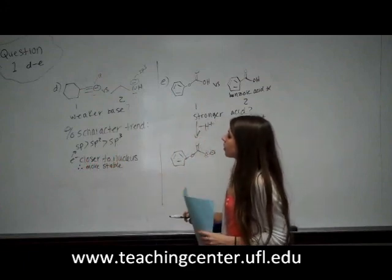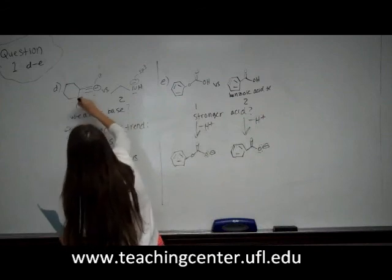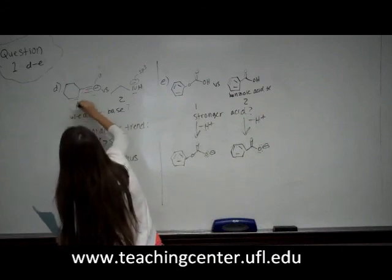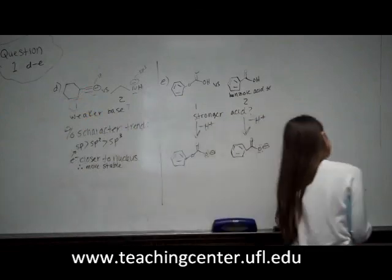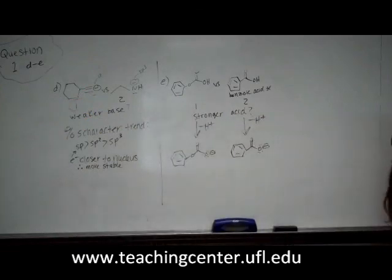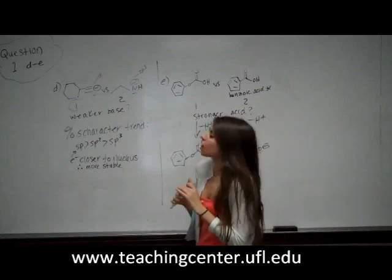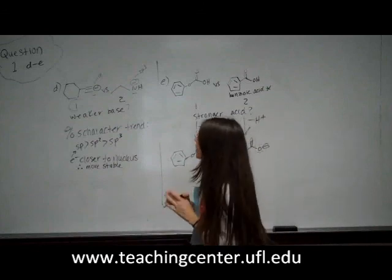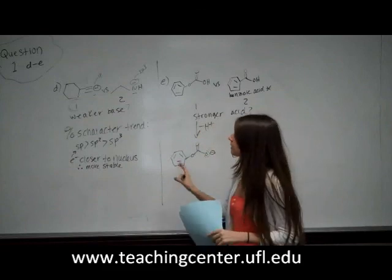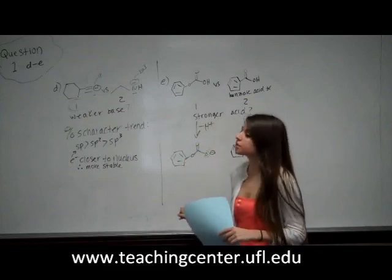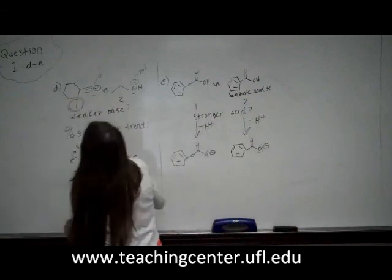So actually, choice one would be our weaker base. That's because a higher %S character stabilizes the negative charge better, since electrons are held more closely to the nucleus. So that would be our answer — choice one.